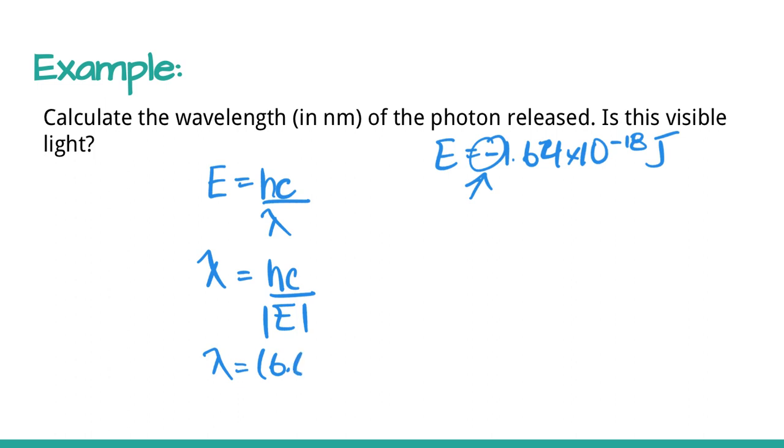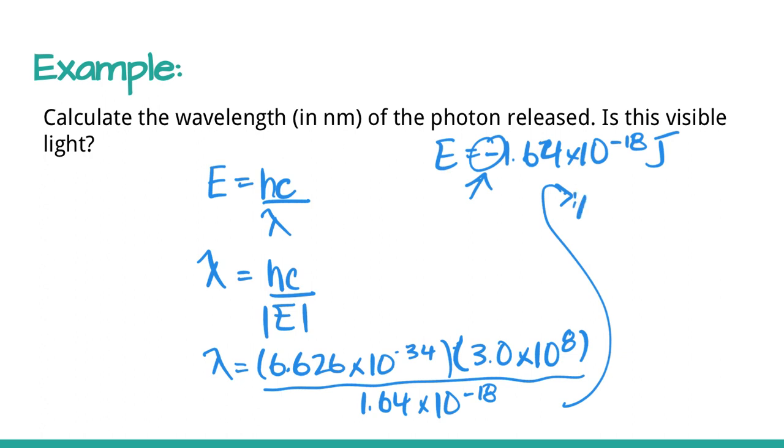Let's plug in our numbers. Planck's constant is 6.626 times 10 to the negative 34, speed of light is 3 times 10 to the 8, and then the energy we got from the last part. Once we do this calculation, we get a lambda of 1.21 times 10 to the negative 7 meters. The question asks for wavelength in nanometers, so we multiply by 1 times 10 to the 9, which works out to 121 nanometers.